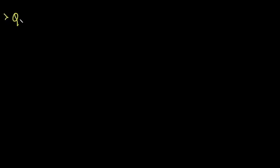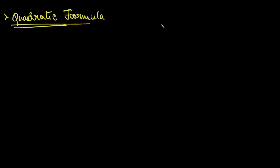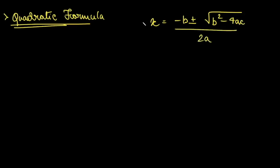In this video we are going to derive the quadratic formula. You might have used the quadratic formula before, and in this video we will see the derivation of that. Let me write on the side what we will actually prove: x is equal to minus b plus minus root of b squared minus 4ac divided by 2a. This is basically the quadratic formula which we are going to derive.